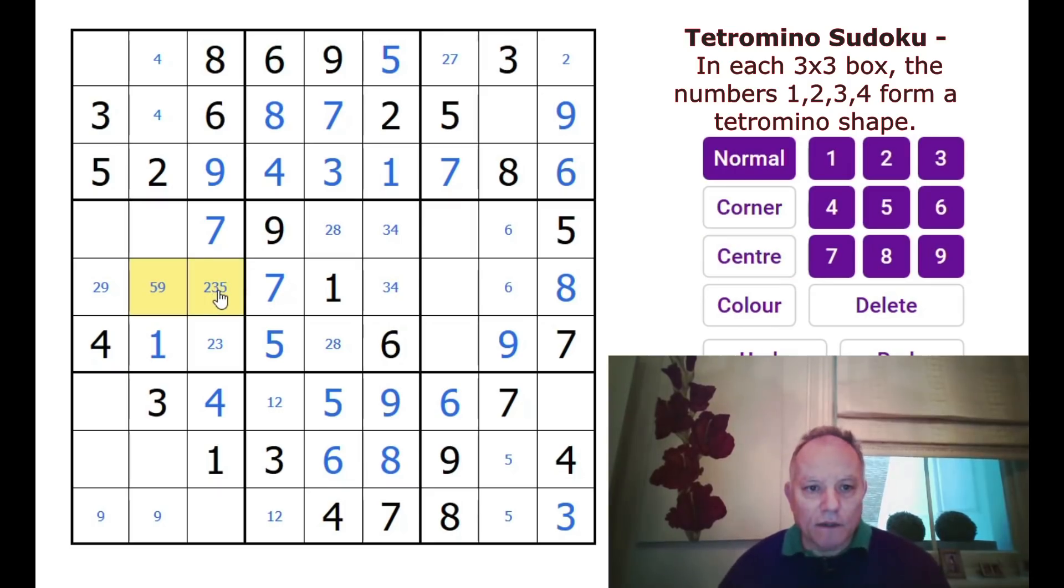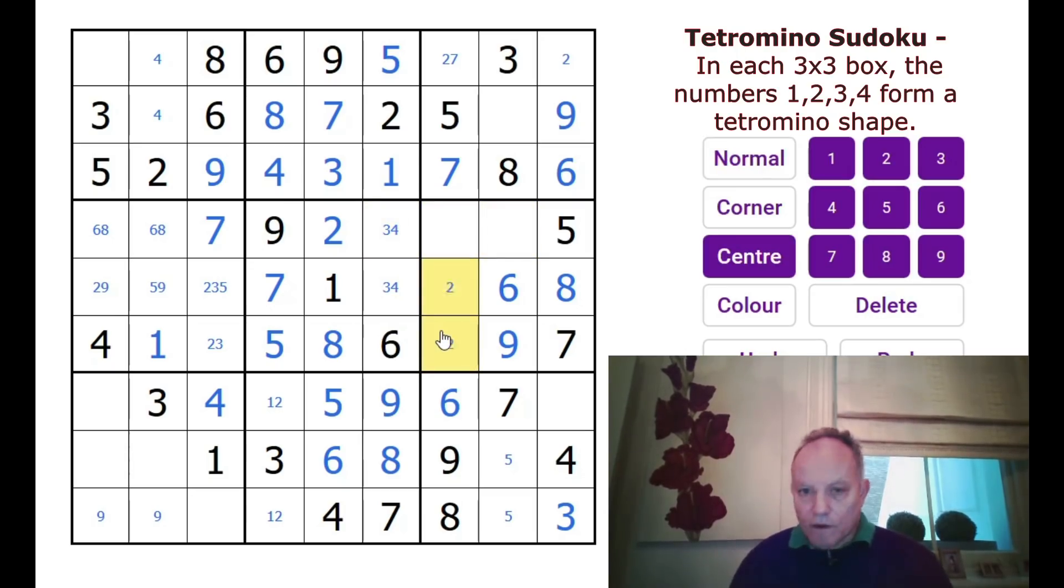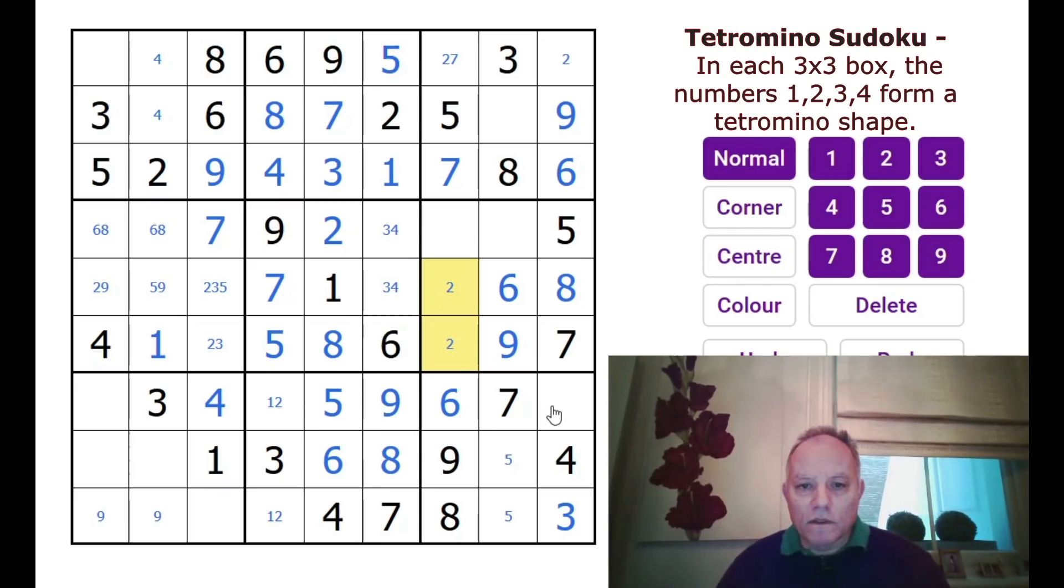Five is in one of those cells. That means this is a six, eight pair up here. That puts six here. We've got a one, three, and four here. Two is in one of those. The eight in that row is there. That finishes off the six, eight pair. One here. Four and seven. So, that's all resolved. And we've got our tetromino there.